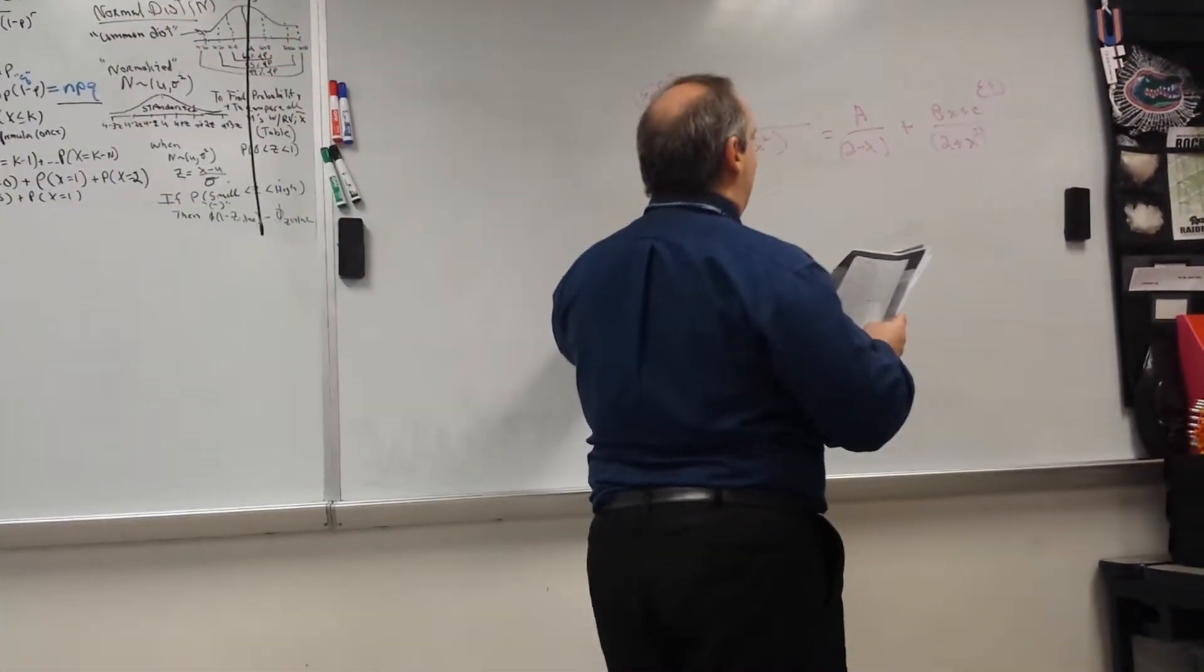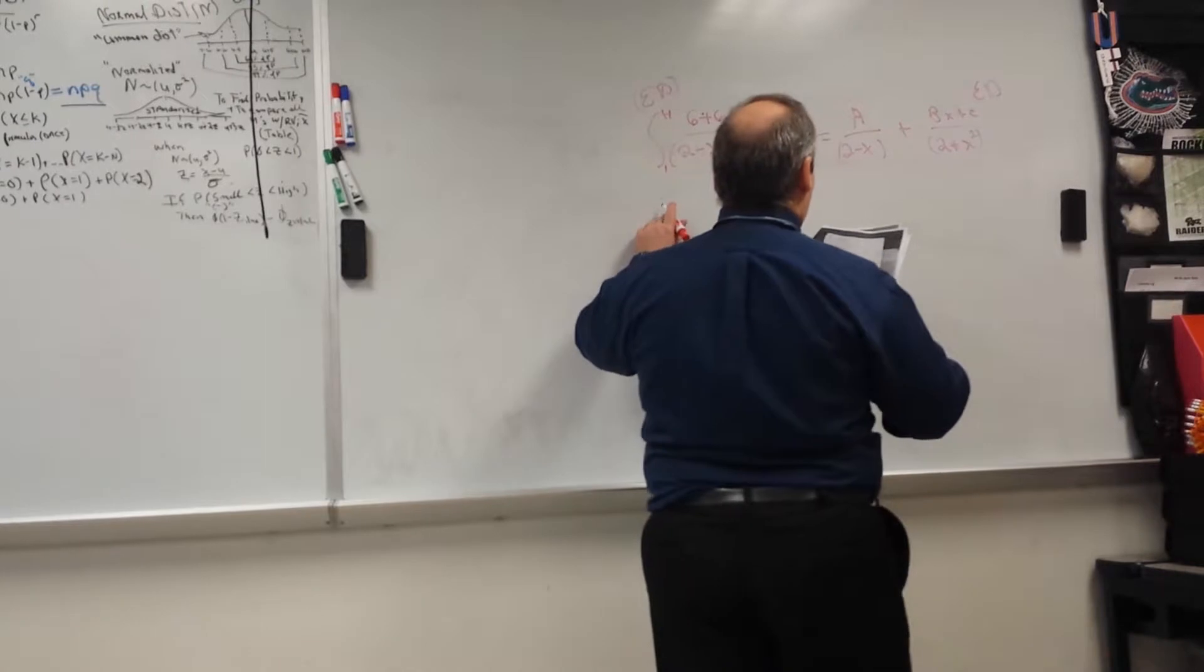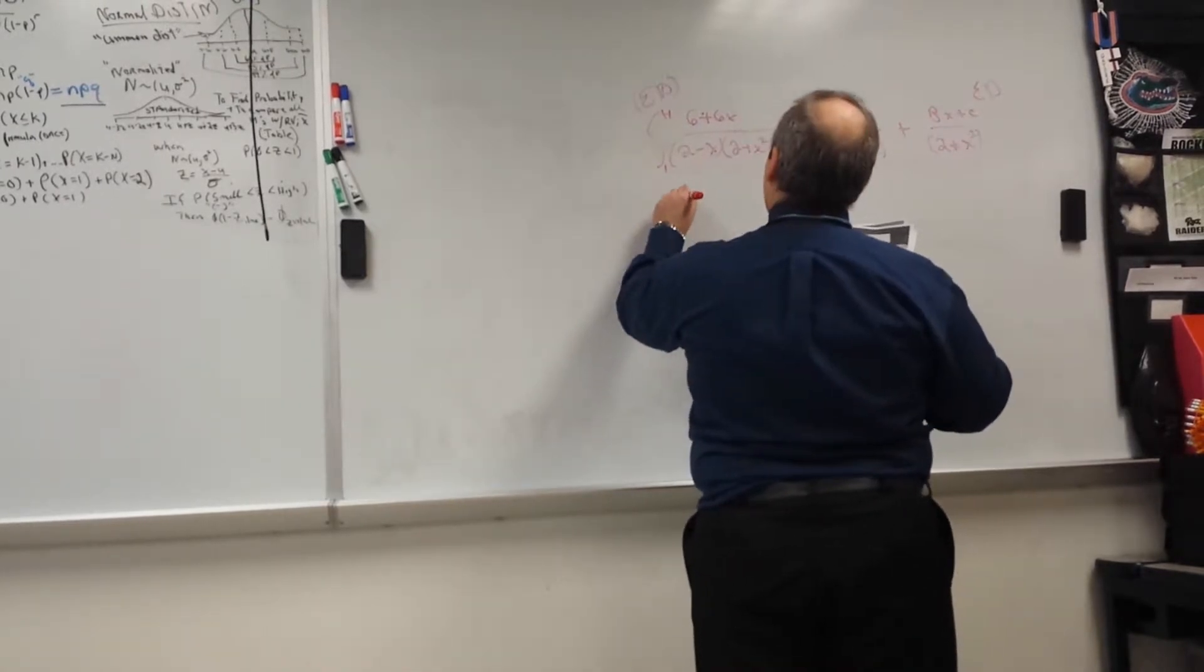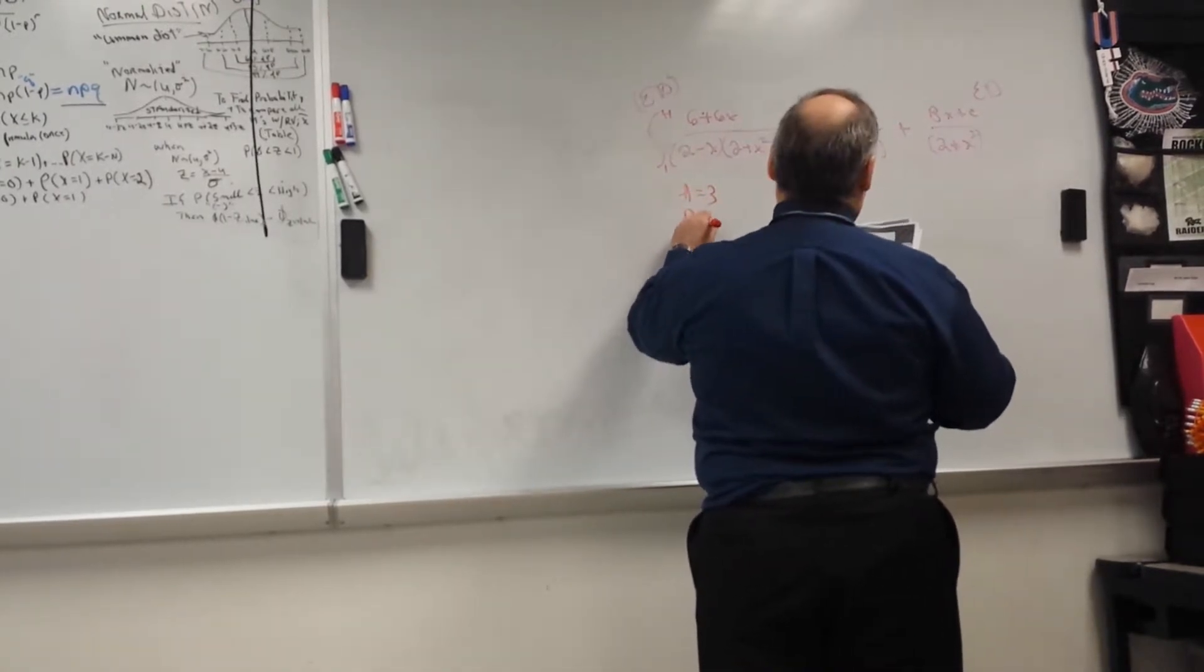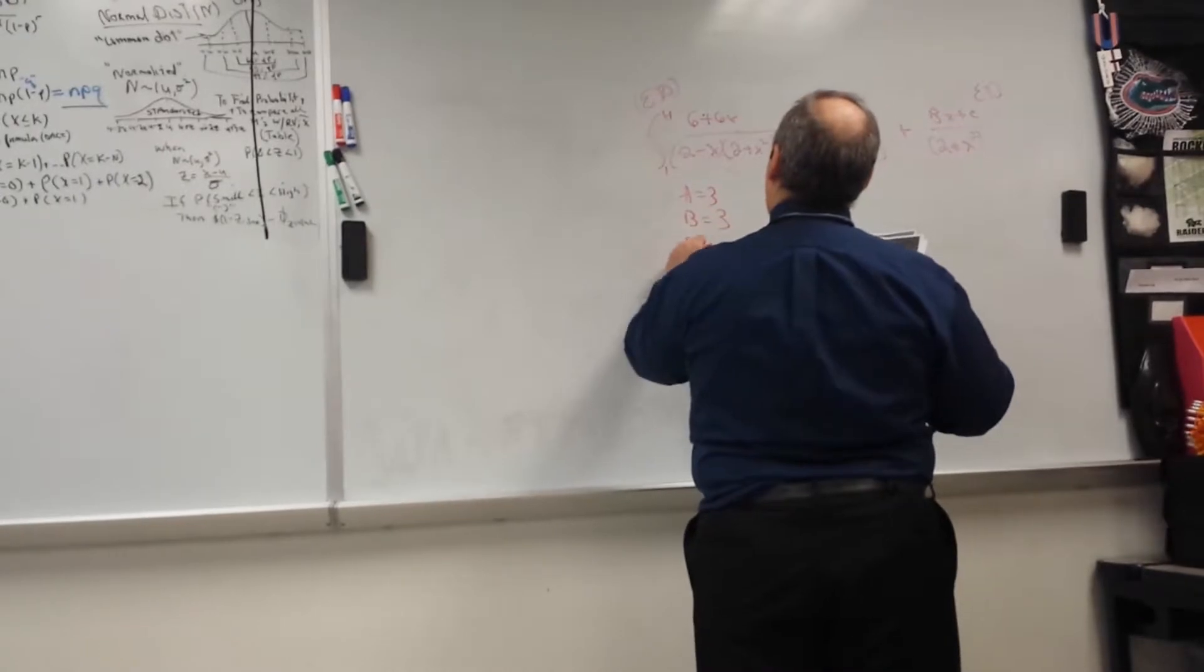Okay, so we have a, b, and c, right? So just to list them, hold on. So we've got a is 3, b is 3, and c is 0. This is the first size.